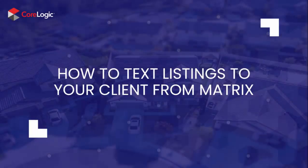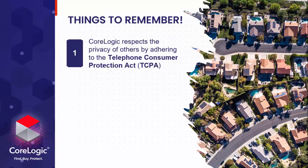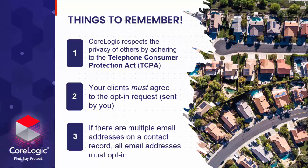In this video, I will show you how to text listings to your clients from Matrix. First, there are a couple of things to remember. Number one, CoreLogic respects the privacy of others by adhering to the Telephone Consumer Protection Act. Number two, your clients must agree to the opt-in request, which you send to them before you can text them listings. And number three, if there are multiple email addresses on a contact record, all email addresses must opt-in.